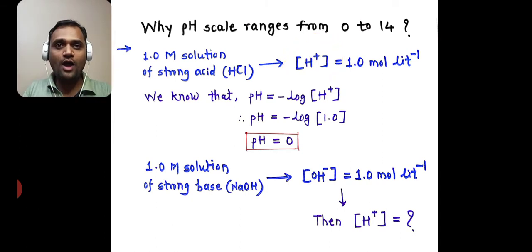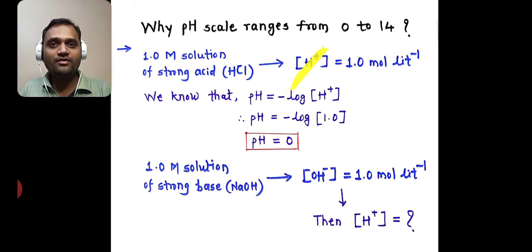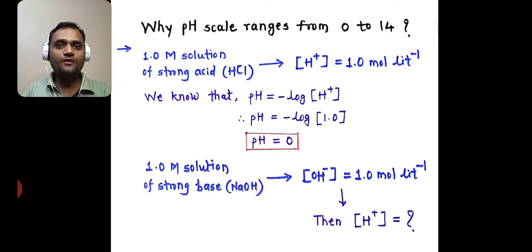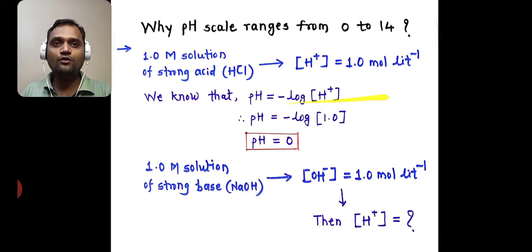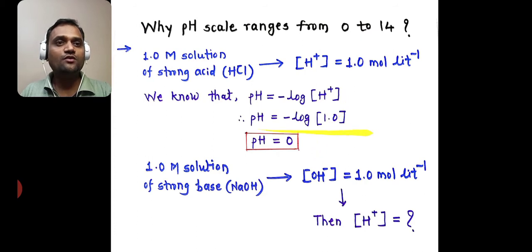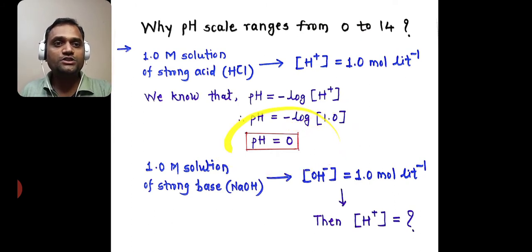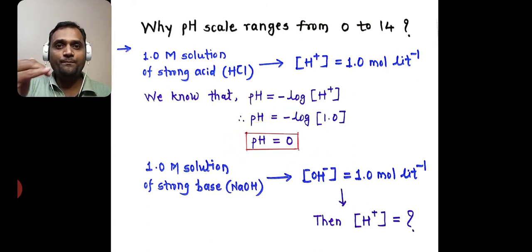In a 1 molar solution of HCl, the molar concentration of H⁺ is 1 mol per liter. Since the solution is 1 molar and HCl is a strong acid, it is a strong electrolyte and undergoes complete ionization. Therefore, the molar concentration of H⁺ is 1 mol per liter. Using pH = −log₁₀[H⁺], we substitute the value: pH = −log(1). Since log(1) = 0, pH becomes 0. So the minimum range of pH is 0.